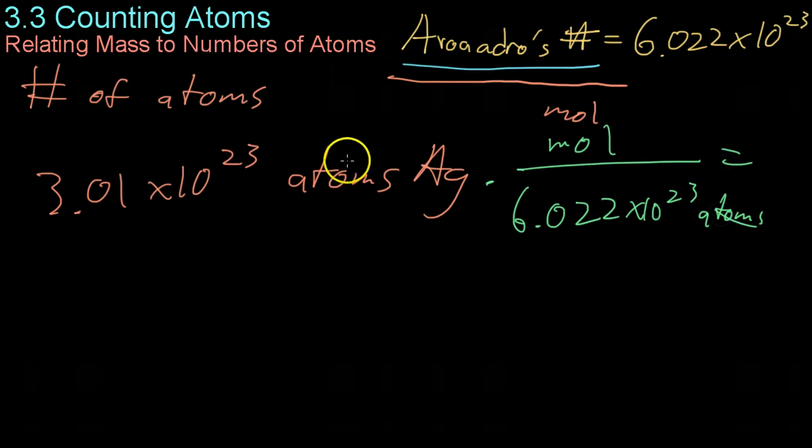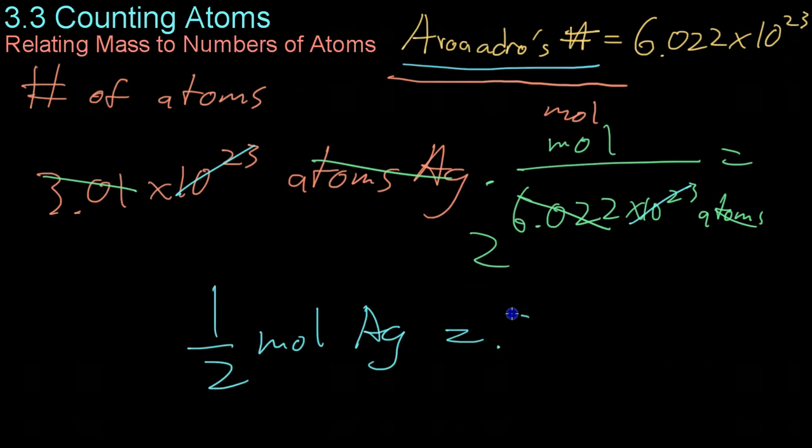And after doing some quick math, the 6.022 is exactly twice the 3.01, and the 10 to the 23rd will both cancel out on the top and bottom. You get that you have half a mole of silver or 0.5 moles, if you prefer decimals.